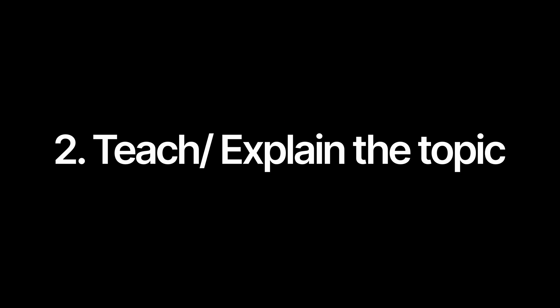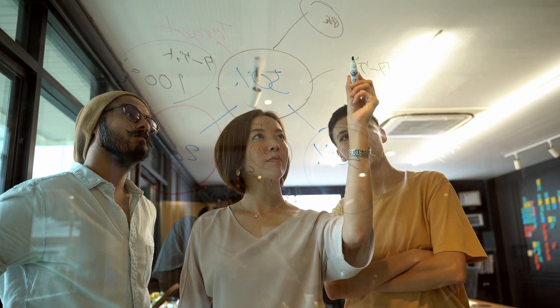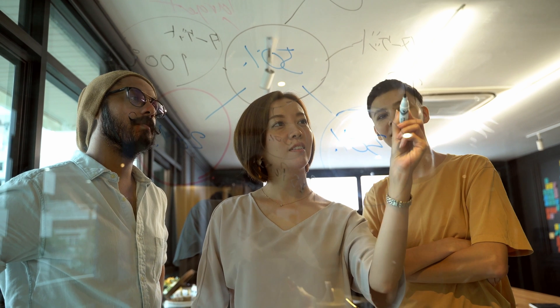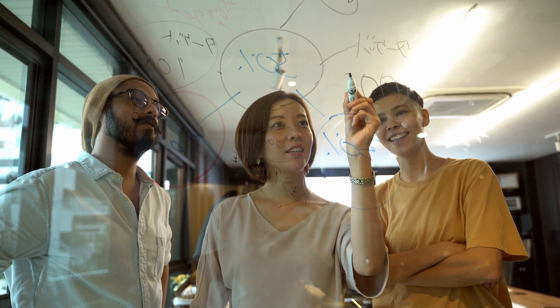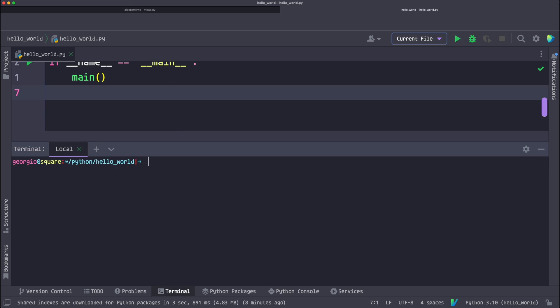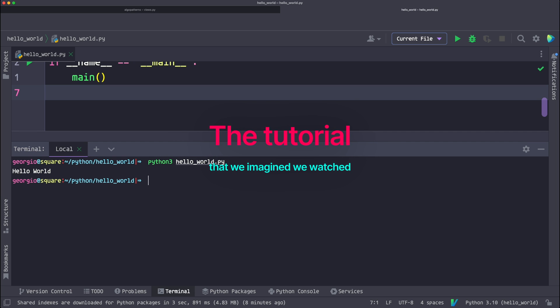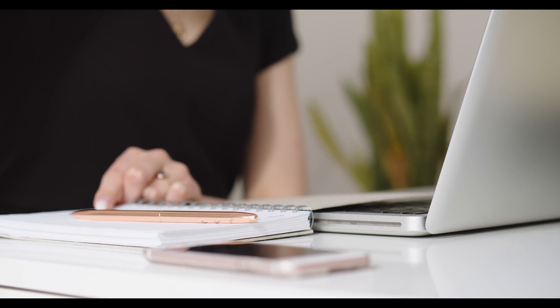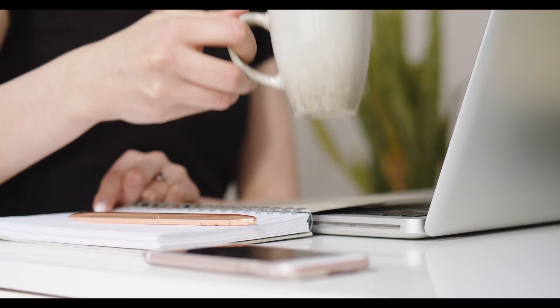If you've ever attempted to teach or explain something to somebody, you've probably noticed that it's very difficult to do if you don't have a complete understanding of what you're trying to teach or explain. For example, if we were to show somebody this code and try to explain to them how it works based on the tutorial that we just watched, we'd probably only be able to explain as far as what the print function is doing.